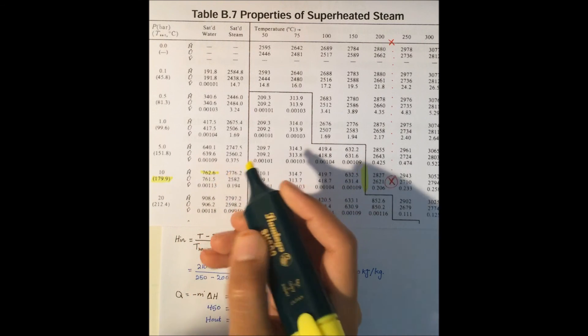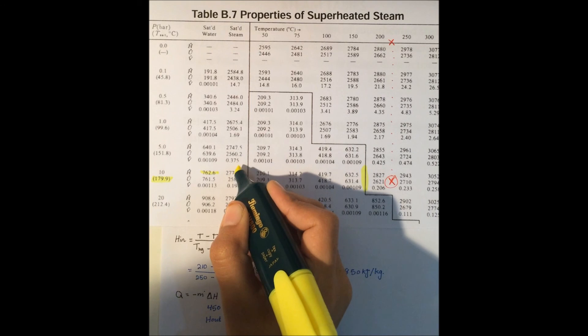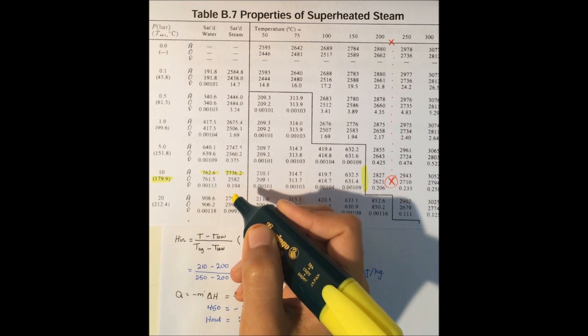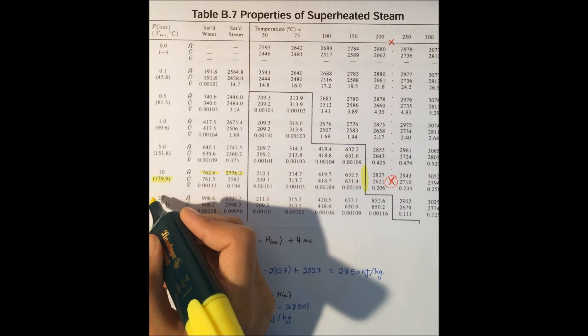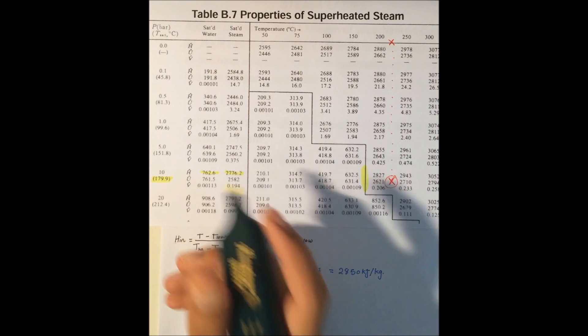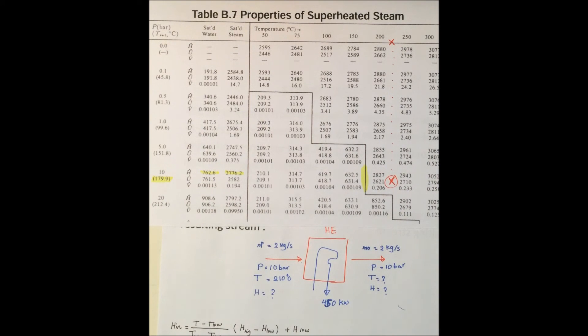We know the enthalpy is between the pure vapor and pure liquid at saturation, so we know the temperature of the stream coming out is saturated at 179.9 degrees Celsius. We already mentioned the enthalpy coming out, which is 2625.